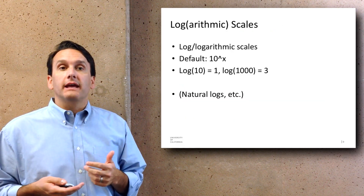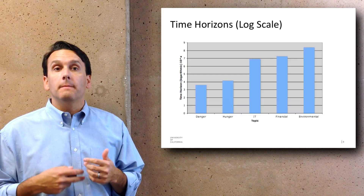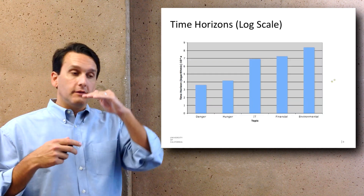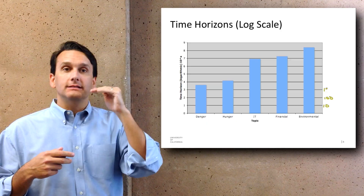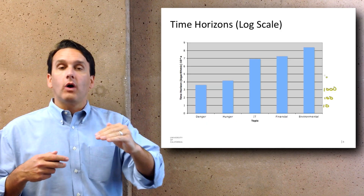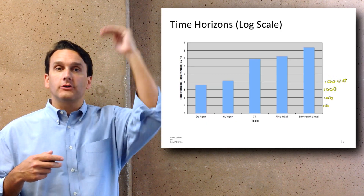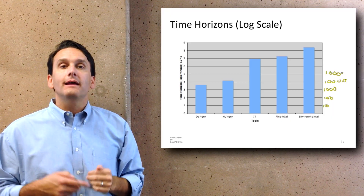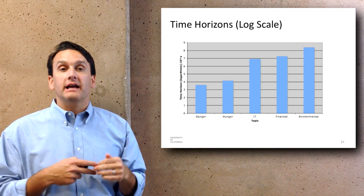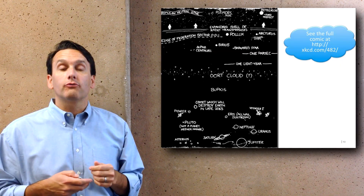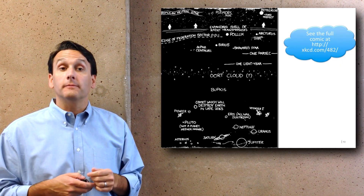A logarithmic scale is based on powers of 10. The first line is the ones, then the next line is times 10, the next times 100, the next times 1000. This allows you to see exponential growth rather than linear variables better.